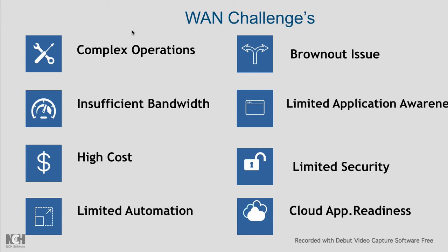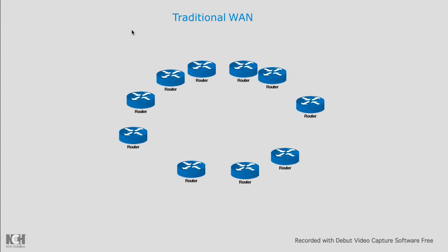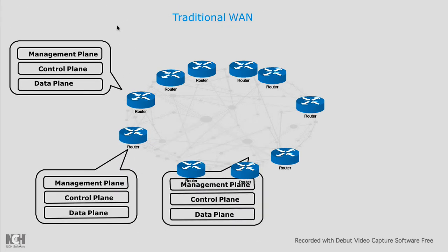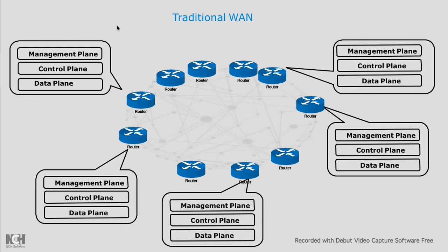Let's see what the traditional network architecture looks like. There are bunches of routers that must be connected in a full mesh, requiring complex configuration of BGP, MPLS, and security on each and every router individually through distributed configuration, because each router has its own management, control, and data plane.